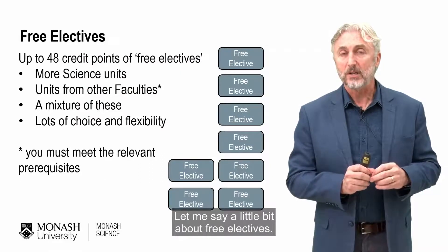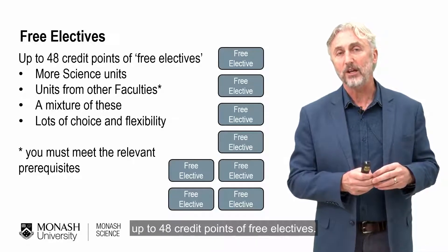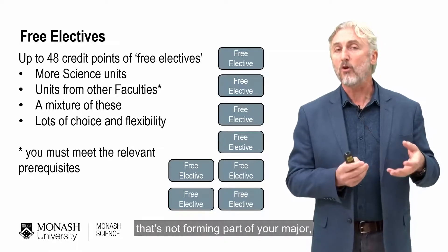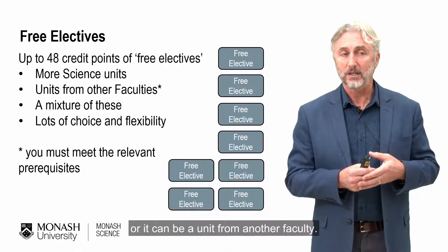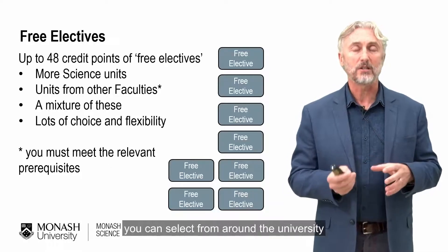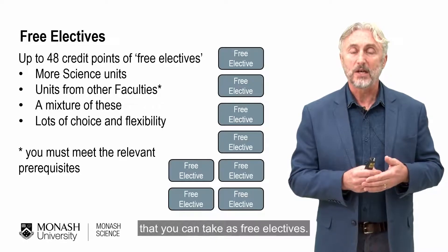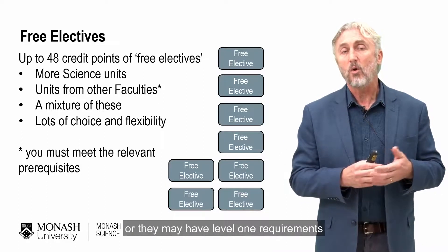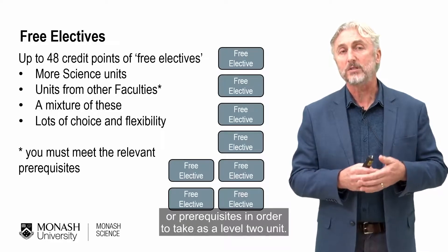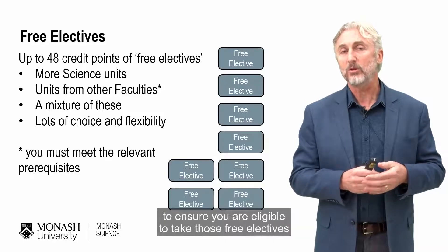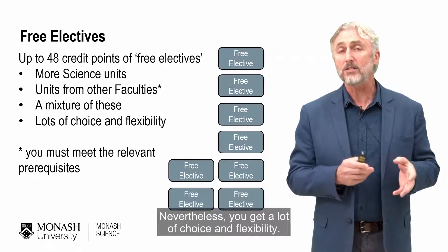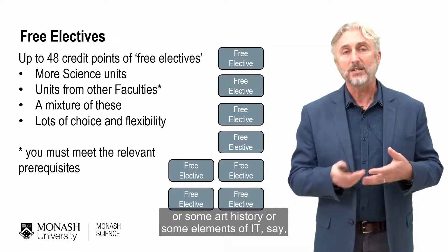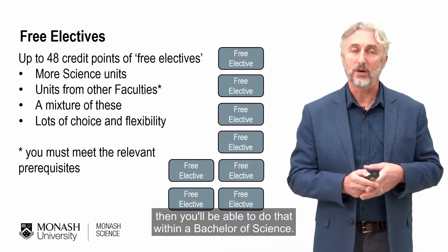Within a Bachelor of Science, you can take up to 48 credit points of free electives. A free elective can be a unit from within the Faculty of Science that's not part of your major, or a unit from another faculty — there's a very wide range available around the university. Some units you won't be able to take because they're limited to students enrolled in a particular course, such as pharmacy units, or they may have prerequisites. Check the handbook to ensure you're eligible. If you wanted to study some economics, art history, or elements of IT, you can do that within a Bachelor of Science.